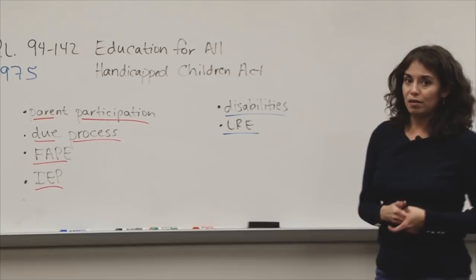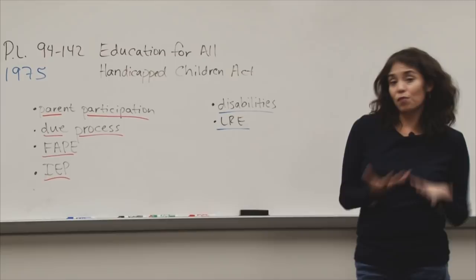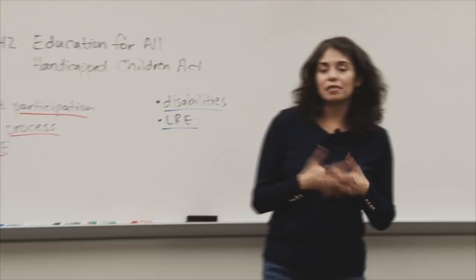Prior to that, students with special needs did not go to school. They didn't have a right to go to school — there was really nothing for them. They basically stayed at home or were put into institutions, kept in the back room of the house, and really weren't seen in public. It wasn't until 1975 with that legislation that they had a right to be educated.